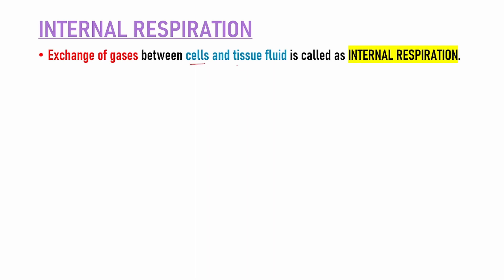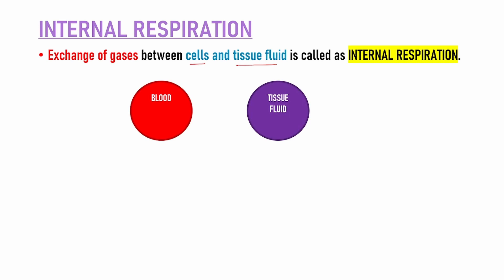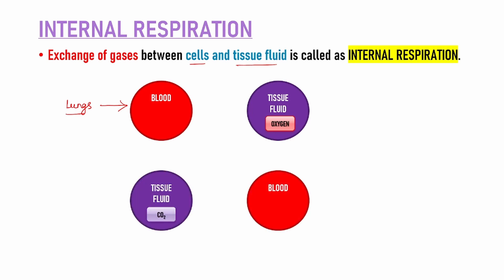Next type of respiration is internal respiration. Internal respiration basically cells ya tissue fluids ke beech mein exchange of gases hota hai — usse process ko hum kehte hai internal respiration. Blood ke andar jo oxygen lungs ke through milta hai, oxygen reaches the lungs, from lungs it is passed on to blood. Blood is oxygen ko carry karega and it will pass it to the tissue fluid. Tissue fluid carbon dioxide ko release kar raha hai blood ke andar — toh ye jo exchange of gases hota hai, isse hum kehte hai internal respiration.